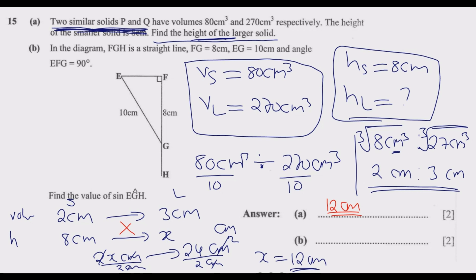We now move to question B. In the diagram, FGH is a straight line, FG = 8 cm, EG = 10 cm, and angle EFG = 90°. We are asked to find the value of sin(EGH).